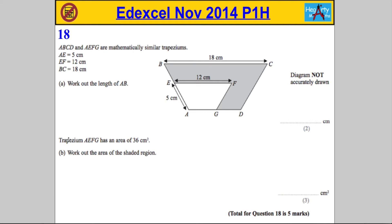Question 18: ABCD and AEFG are mathematically similar trapeziums. Let's just highlight that word similar because it's going to be very important to this question.